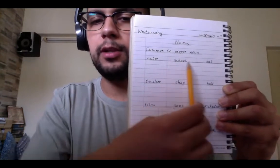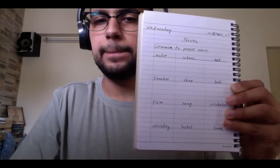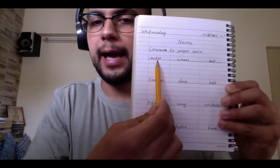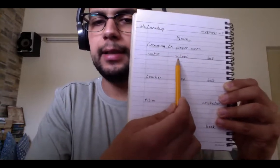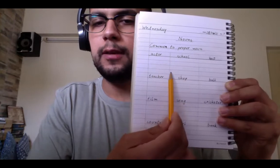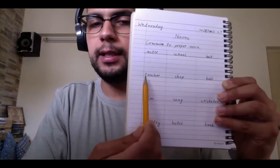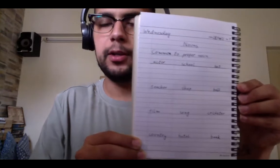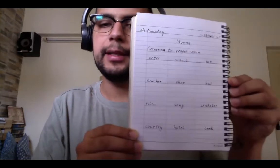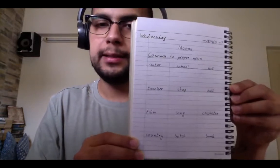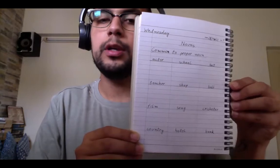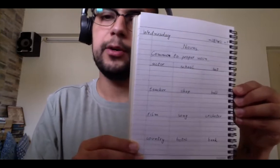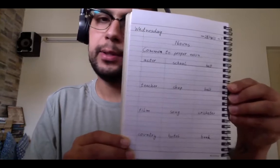After that, you will make this table. You have to divide your page into three parts like this. Then in each part, you are going to write down the words that you saw earlier: actor, school, hat. Then you leave one, two, three, four lines, and then you put down the next line: teacher, shop, ball. I will send you a picture of this page later so you can copy it. Before we do anything else, I want you to make this table in your notebook. You can pause the video, stop the video here, do this in your notebook, and then start the video again.